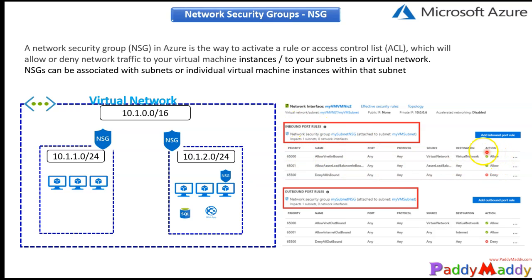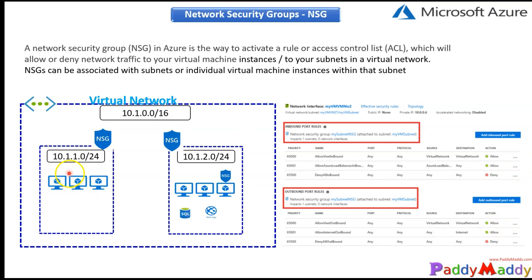Incoming traffic must match the access control list rules; otherwise the default rule is deny. On the outbound side, all outgoing traffic is allowed, meaning users can browse any website or talk to any resource, either internal or on the public internet.